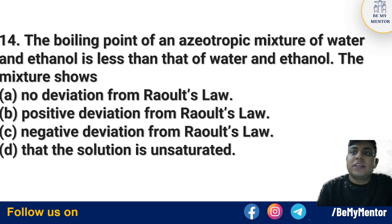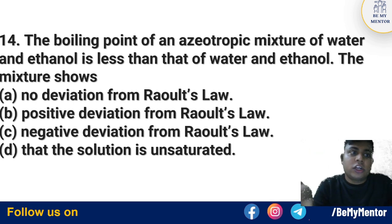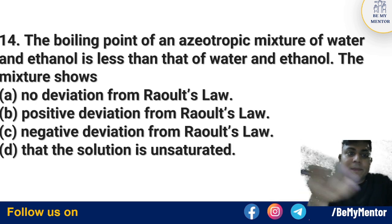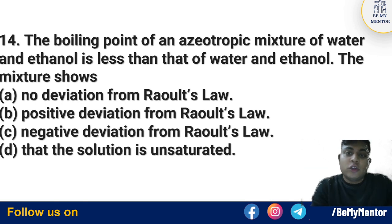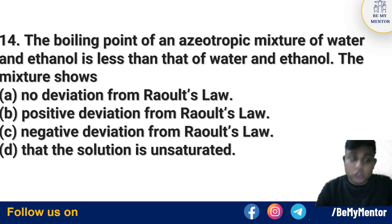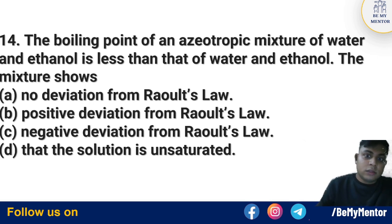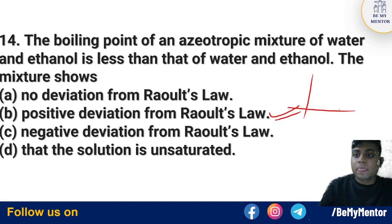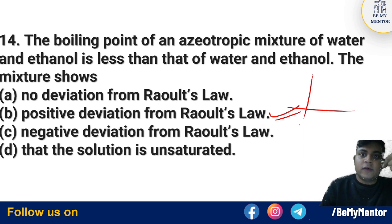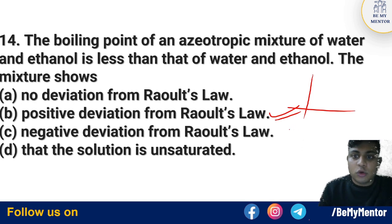The boiling point of an azeotropic mixture of water and ethanol is less than that of pure water and ethanol. The reason is positive deviation from Raoult's law. Option number B is the correct answer. If you have a graph of the azeotropic mixture versus ideal solution, you can mark the question from there.